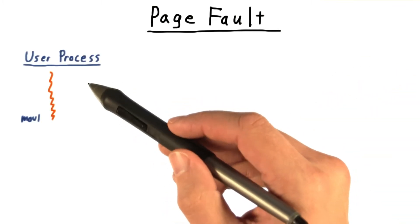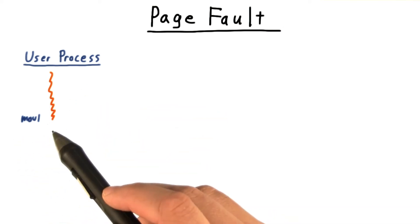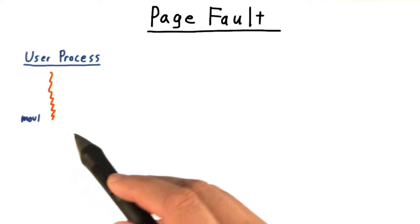I'll represent a user's process like so, and at some point, he uses a virtual memory address that's not actually mapped to physical memory at the moment. Yikes.